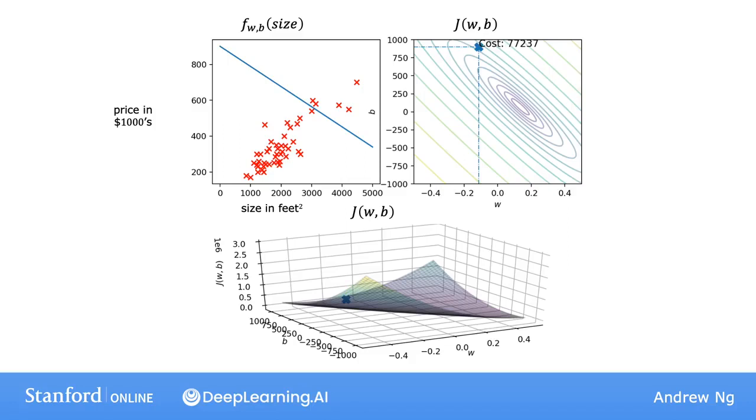Often, w and b will both be initialized to 0, but for this demonstration, let's initialize w to be equal to negative 0.1 and b to be 900. So this corresponds to f equals negative 0.1x plus 900.